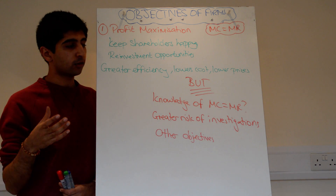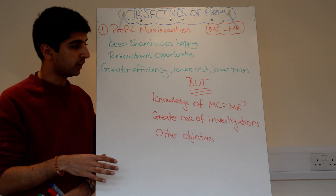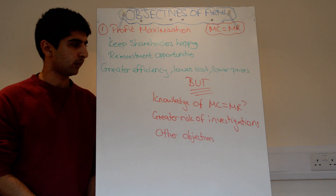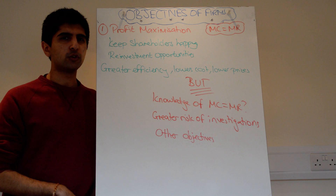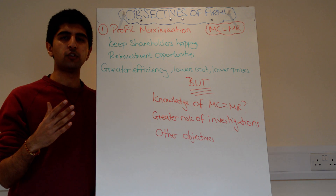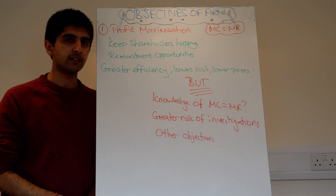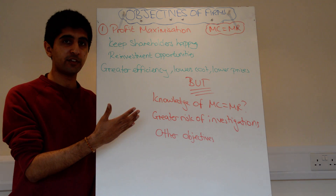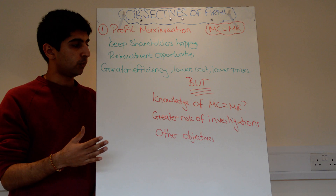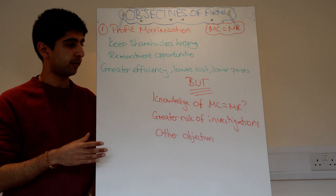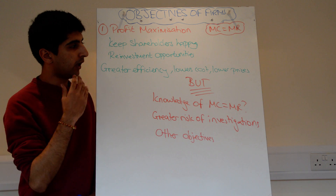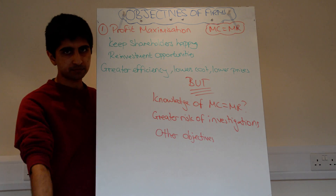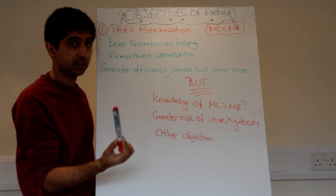Also, if firms are making huge profits, there's a greater risk of competition authorities and regulatory bodies investigating the firm. If they're making huge profits, government bodies might think there's some exploitation going on — maybe higher prices than there should be. These investigations are costly to the firm, and will often lead to end results such as lower prices, increased wages for staff, or other measures that cost the firm more money.